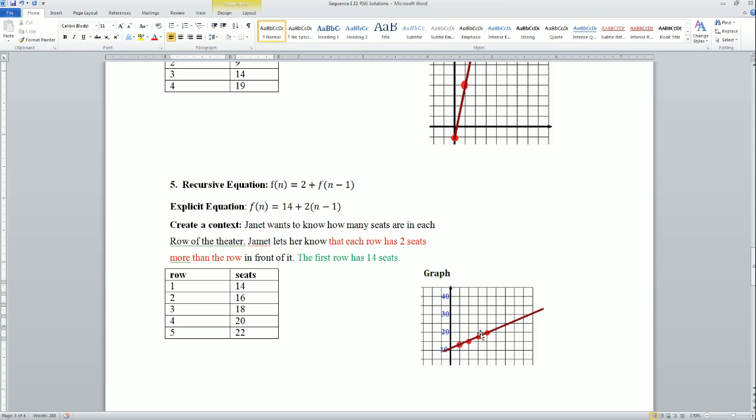You wouldn't write zero row because the zero row wouldn't make sense in the context of this problem. All right, so here's your explicit. That is your recursive, because two is your common difference.